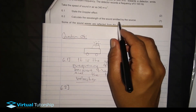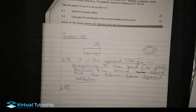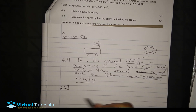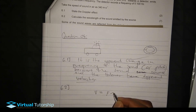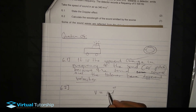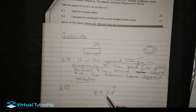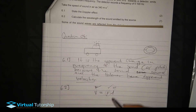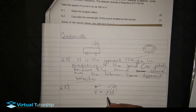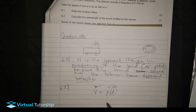Question 6.2: Calculate the wavelength of the sound emitted by the source. We use the formula: velocity equals frequency times wavelength. The speed of sound is given as 340 meters per second. I need to find the frequency of the source first using the Doppler effect formula, then I can calculate the wavelength.